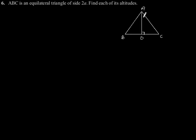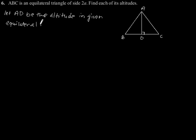Suppose ABC is our equilateral triangle and AD is altitude. Let AD be the altitude in given equilateral triangle, that is triangle ABC.